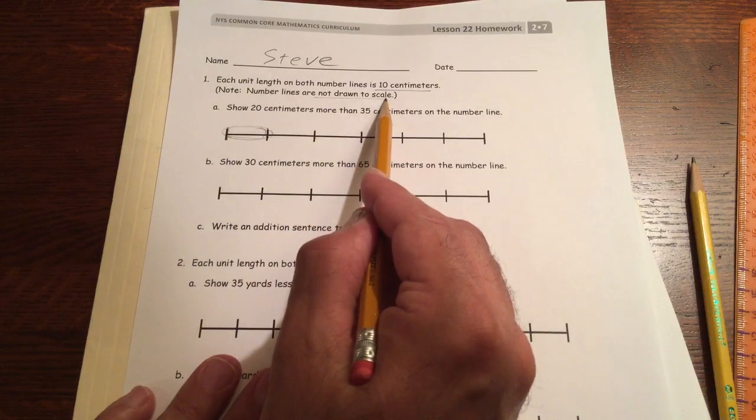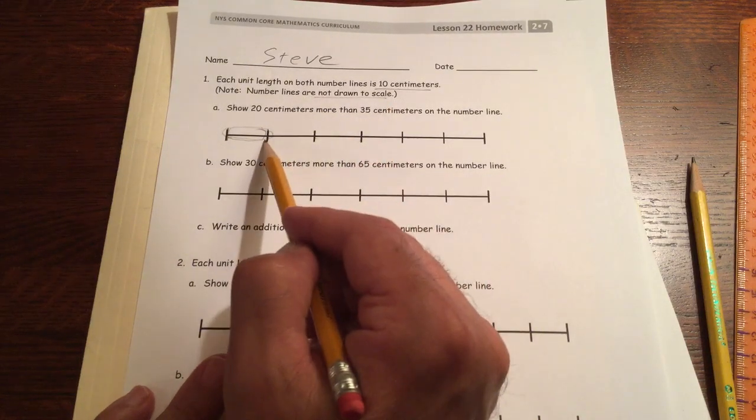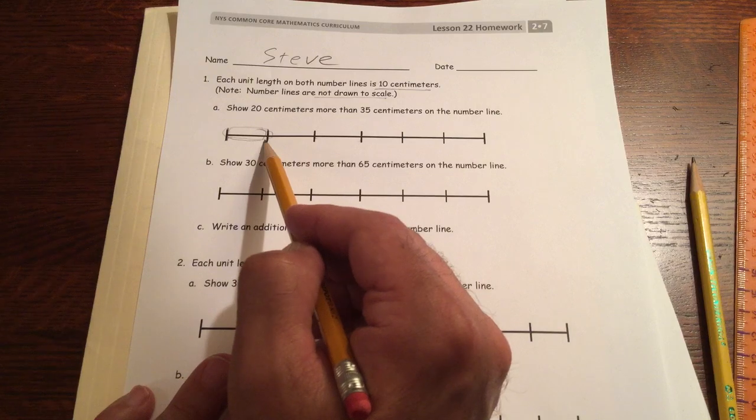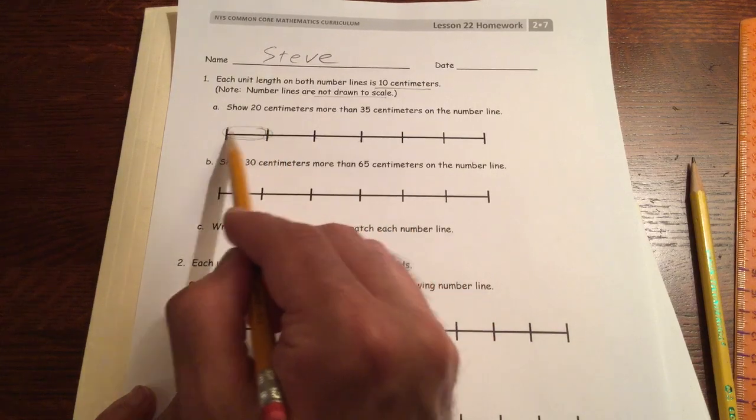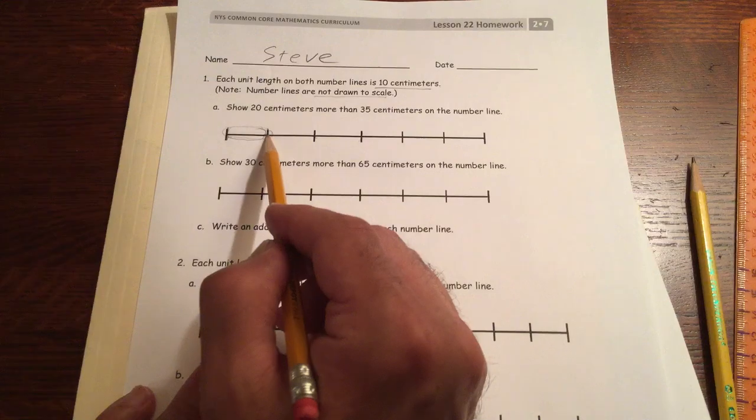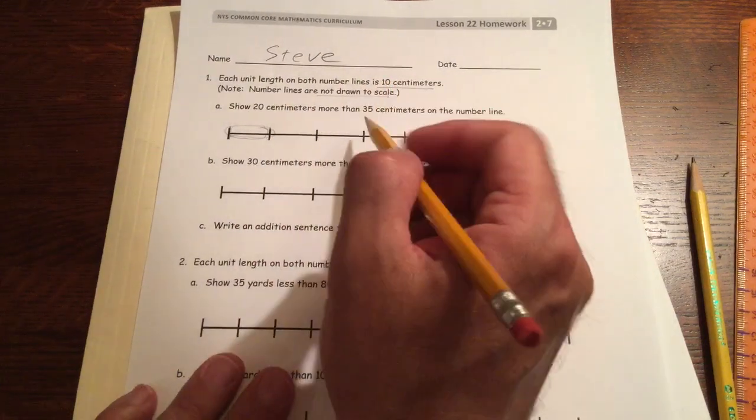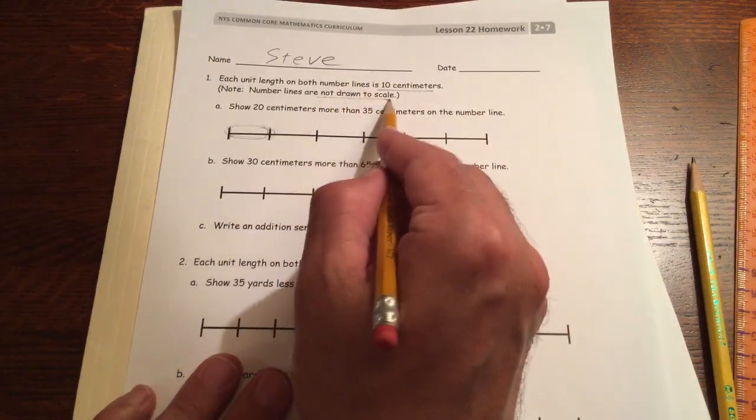Not drawn to scale means you can't measure them. 10 centimeters is a lot longer than this, so we're calling it 10 centimeters, but it isn't really 10 centimeters. That's what not drawn to scale means.